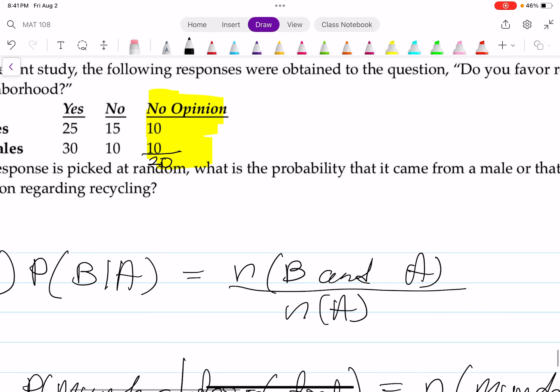20 voters out of how many voters in total? Let's see. 25 plus 15 plus 10, that equals to 50. 30 plus 10 plus 10, that is also 50. There are 100 voters in total.